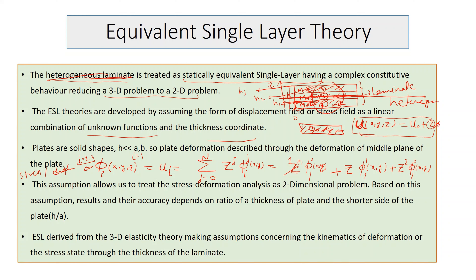This assumption allows us to treat the stress-deformation problem as a two-dimensional one. The accuracy of the results depends on the thickness-to-span ratio: for thin plates the results are very good, but as thickness increases the accuracy decreases. The equivalent single layer is derived from three-dimensional elasticity theory by making assumptions about kinematics of deformation or stress distribution through the laminate thickness.